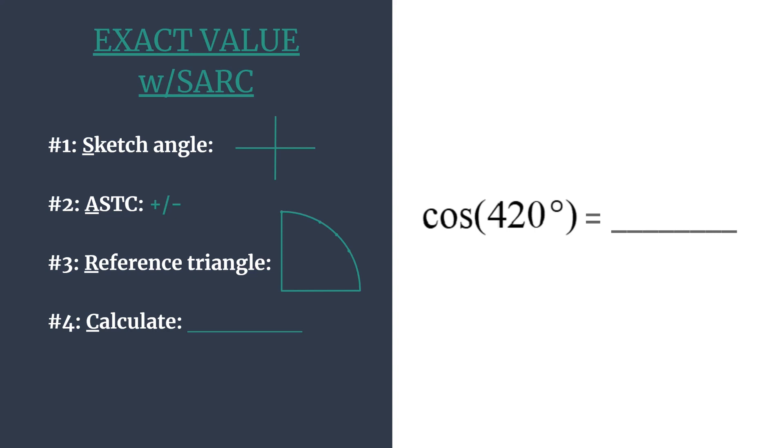First we want to sketch the angle. Let's look at 420 degrees and notice two things. First we know we're rotating in the counterclockwise direction because our angle is positive. And second notice that this is more than one rotation. What's going to be helpful for sketching the terminal side of our angle is actually finding a coterminal angle. To do this we just need to subtract 360 degrees, which is a full rotation, from 420.